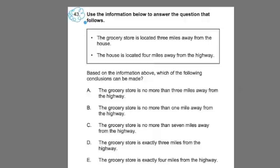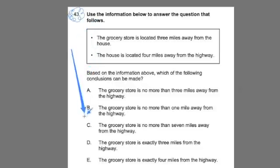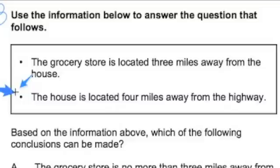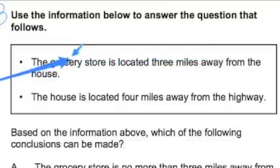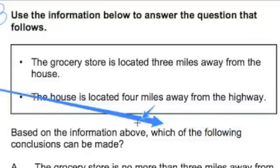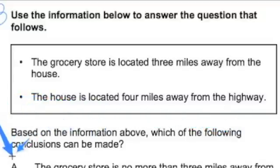First thing I'm going to do is I'll read it over. You'll notice that they give you a scenario here in the box. You have to read that over very carefully. Read the question. Make sure you look at these two things very carefully before you go on and answer it. So it says here, use the information below to answer the question that follows. Then we're given the scenario. So you've got to visualize it. The grocery store is located three miles away from the house. The house is located four miles away from the highway. And then it has this question: based on the information above, which of the following conclusions can be made?